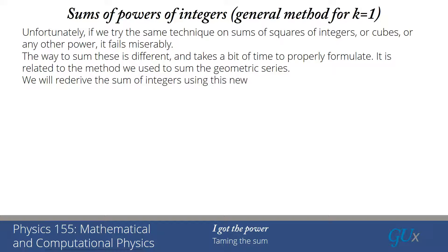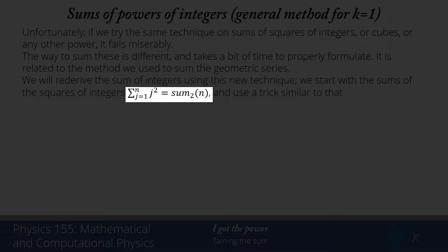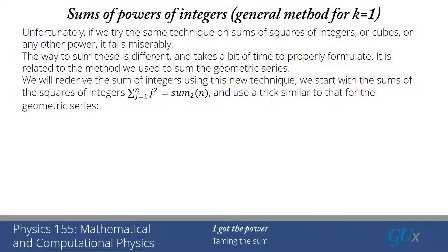We're going to start now by re-deriving the sum of integers using this new technique and the starting point is to look at the sums of the squares of the integers. We look for the sum of the power that's one higher than the power that we're actually interested in. So we're looking at sum subscript 2 because we're raising to the second power of n and then we use this trick that's similar to the geometric series.